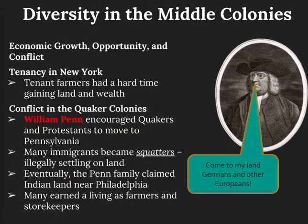Diversity in the Middle Colonies: economic growth, opportunity, and conflict. Fertile lands and opportunity for prosperity attracted migrants from the Middle Atlantic, and profits from grain exports financed their rapid settlement. The manorial lords of New York's fertile Hudson River Valley attracted tenants by granting long leases and the right to sell their improvements, such as barns and houses, to the next tenant. Inefficient farm implements kept most tenants from saving enough to acquire freehold farmsteads.